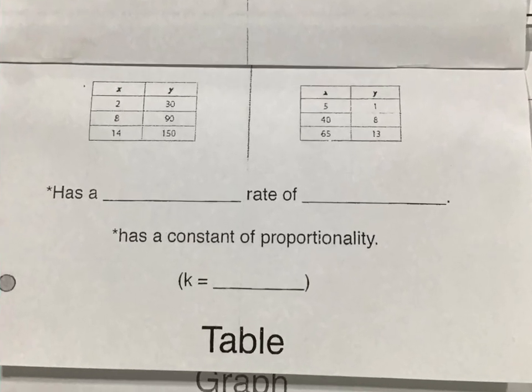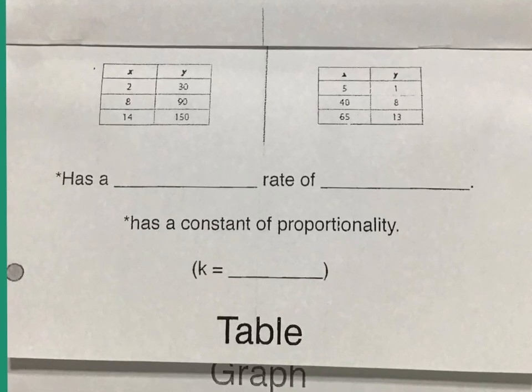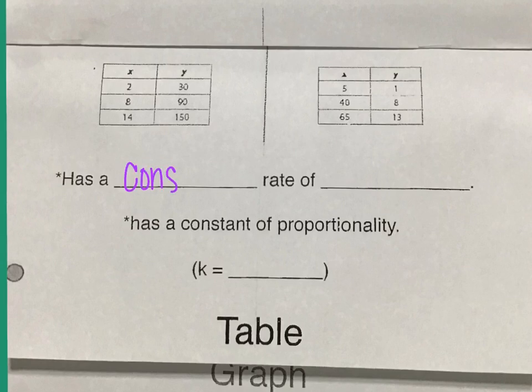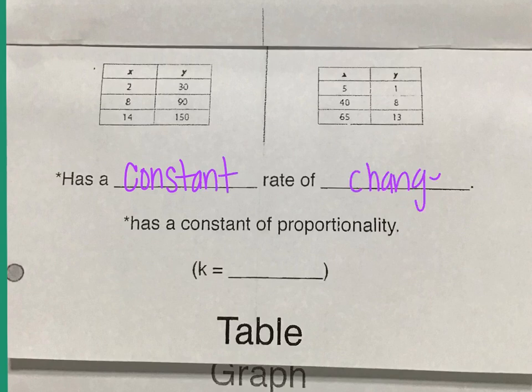I'm going to zoom in just a little bit closer so it's easier for me to write. It needs a constant rate of change. It could also be called a constant of proportionality. Those mean the same thing.